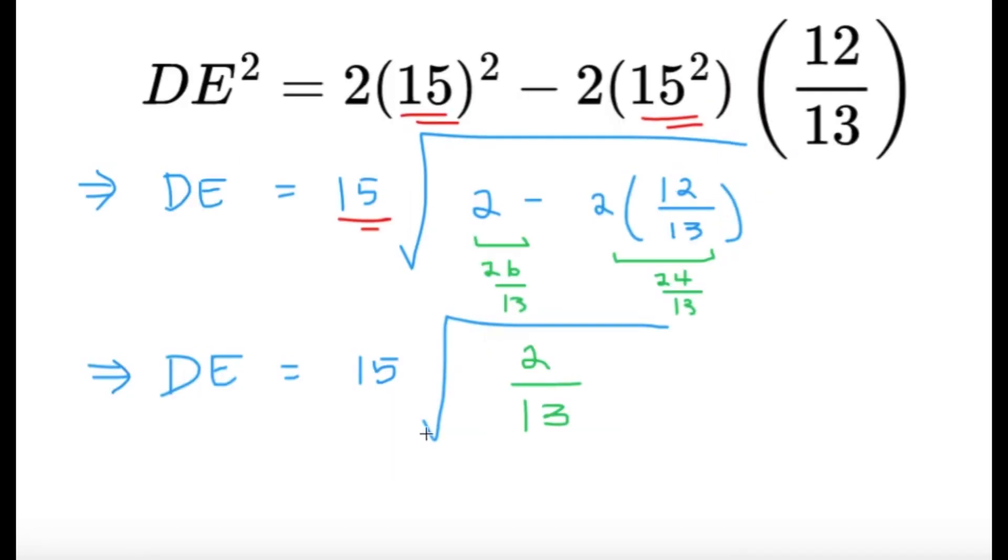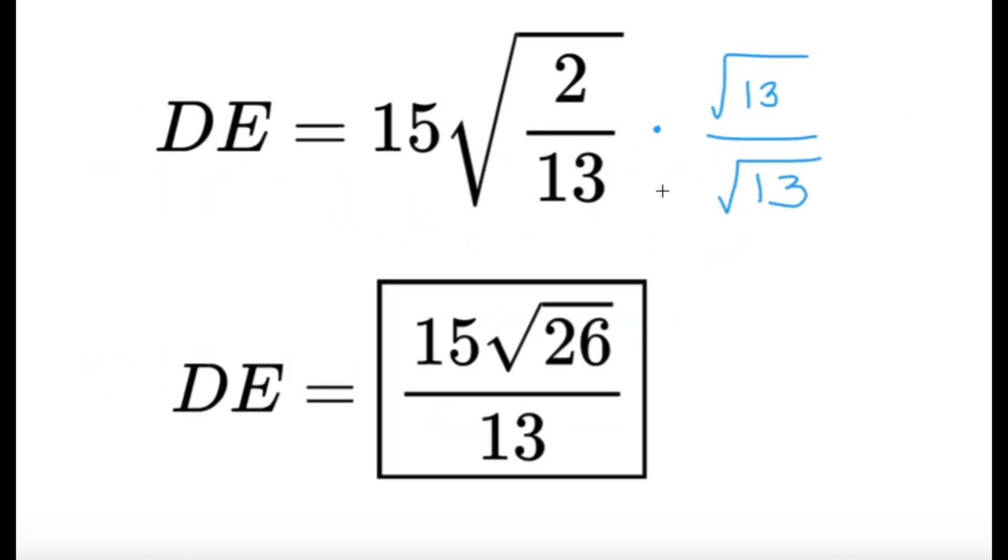So DE would be 15 square root of 2 over 13. We have to rationalize this, so multiply square root of 13 in the numerator and denominator. So it becomes 15 times square root of 2 times square root of 13, that gives us square root of 26 divided by 13. And this will be our final answer.